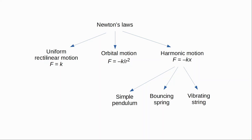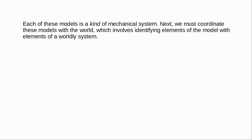Giere says that each of these models is a kind — a kind of mechanical system, to be precise — and more specifically, these models are theoretical kinds. They're not simply found in the world in any straightforward sense. Instead, they are defined using the principles of the classical mechanics theory. So far, all we have are sets of models. The next step is to coordinate some of these models with the world, which involves identifying various elements of the model with specific things in the world.